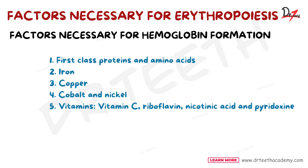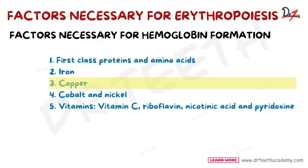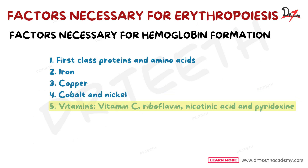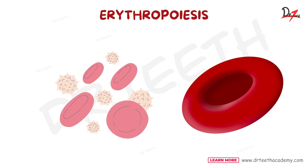The factors necessary for hemoglobin formation include: proteins and amino acids of high biological value; iron, necessary for formation of the heme part of hemoglobin; copper, essential for absorption of iron from the GI tract; cobalt and nickel for the utilization of iron during hemoglobin synthesis; and vitamin C, riboflavin, nicotinic acid, and pyridoxine for hemoglobin synthesis. Absence of even a single factor can impact the process of erythropoiesis.